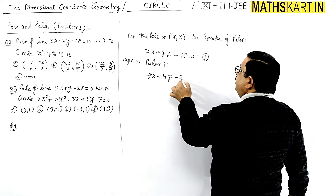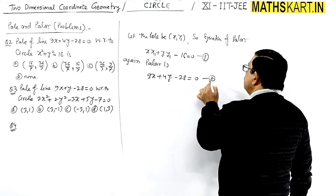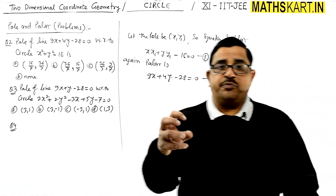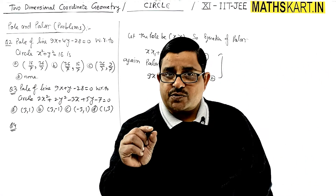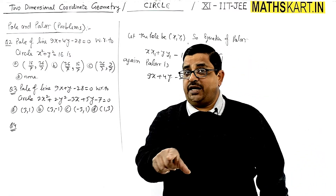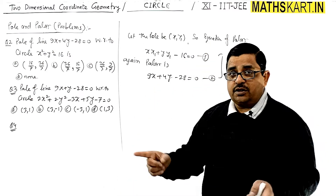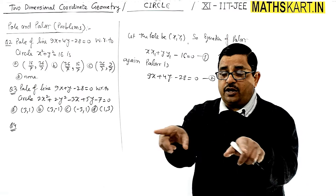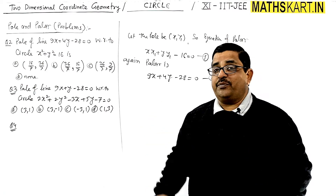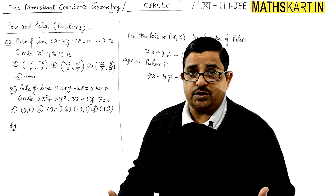So these are the two polars. We have let the point (x₁, y₁) and its corresponding polar equation — the given polar is already provided, and this is the same polar. So we have to compare the two lines, and by comparing the two lines we can find out the pole.